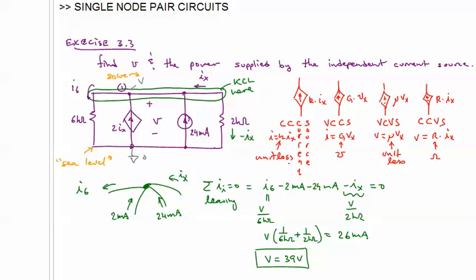Can be modeled as dependent sources. And so you don't buy, off the shelf, a dependent source. But there are devices that, when you model them and try to analyze circuits that involve them, you'll actually use dependent sources as a way to describe their behavior. Another device would be an operational amplifier.